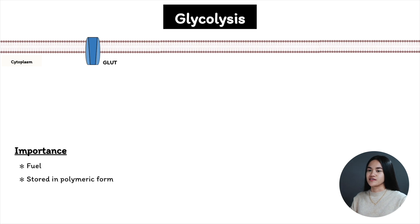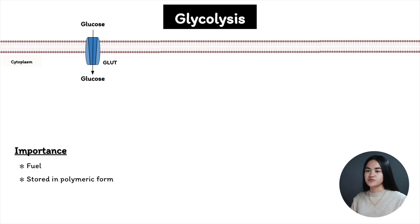Glycolysis occurs in the cytosol or cytoplasm of the cell. Glucose enters the cell via GLUT transporters, or glucose transporters. They belong to the GLUT family and have different and specific functions in the tissues where they are expressed. Let's go through the four major ones, because you're going to be hearing these GLUT transporters in other metabolism lectures.